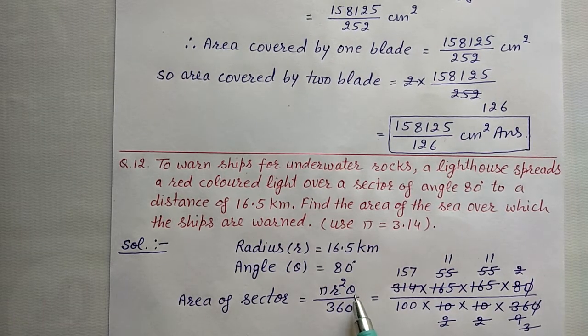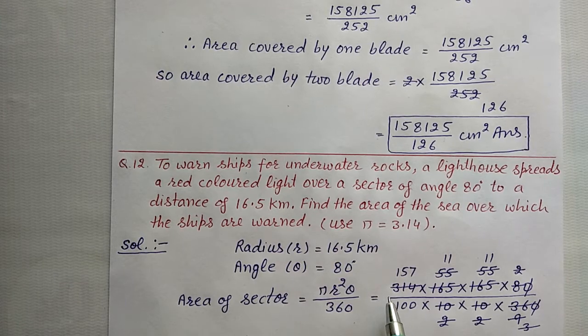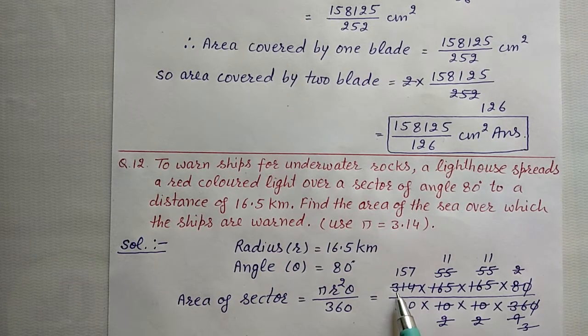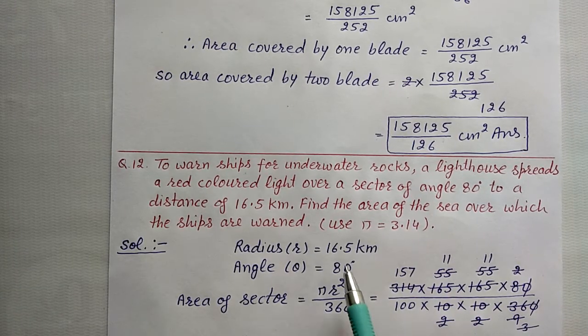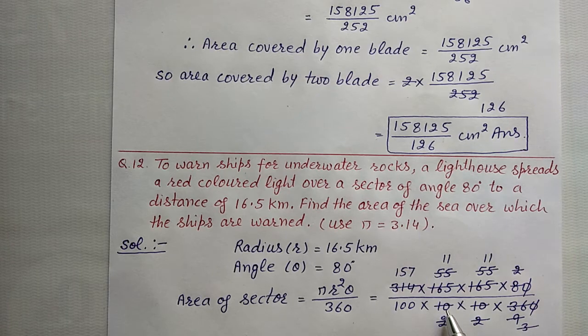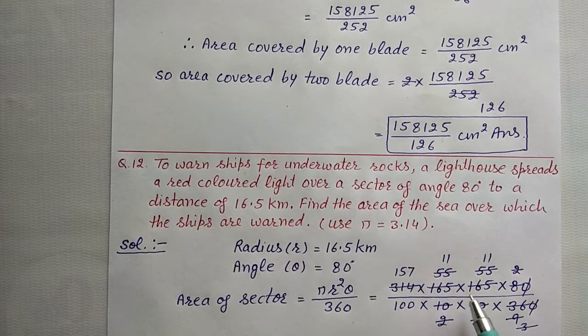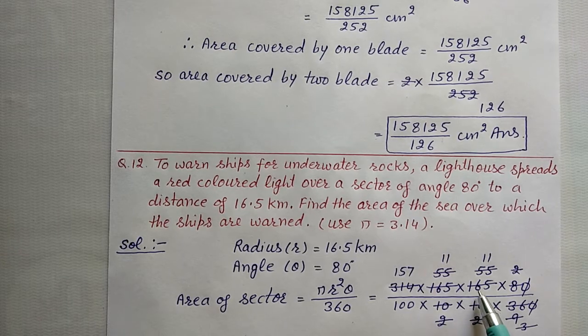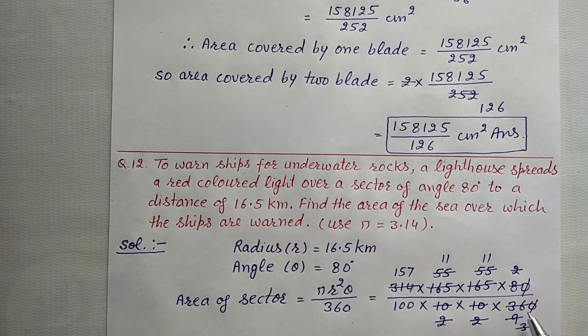Pi r square theta upon 360. Here pi value is 3.14, which is 314 upon 100, into 165 upon 10, into 165 upon 10, theta is 80 upon 360.